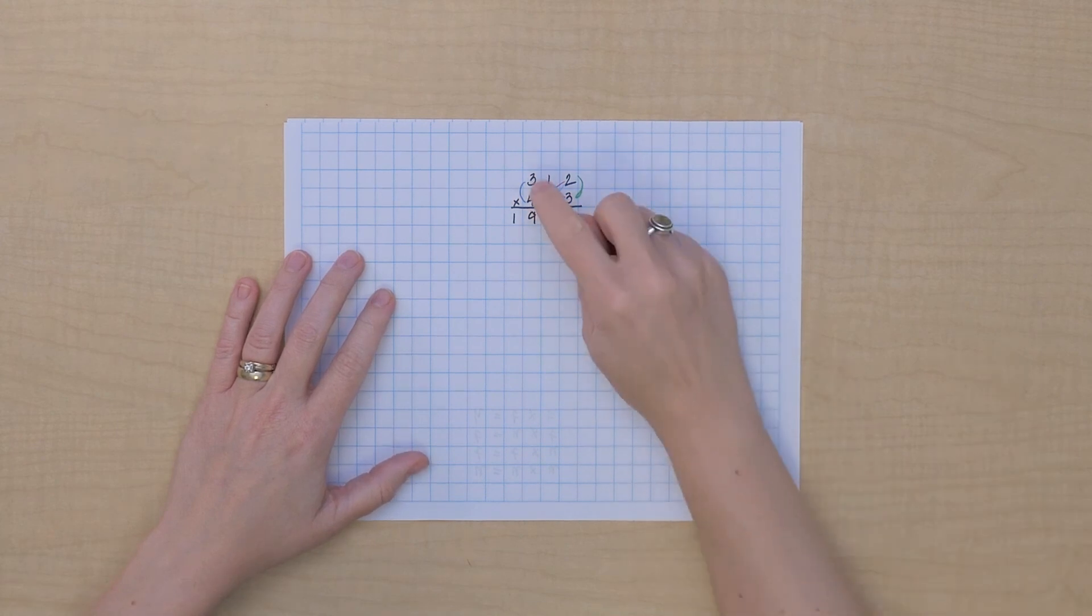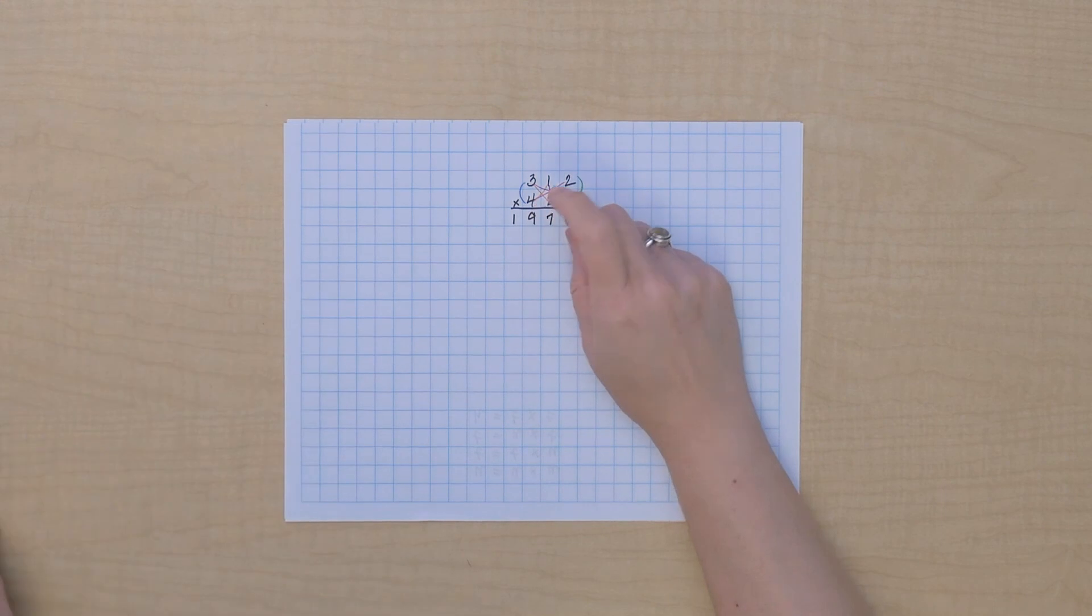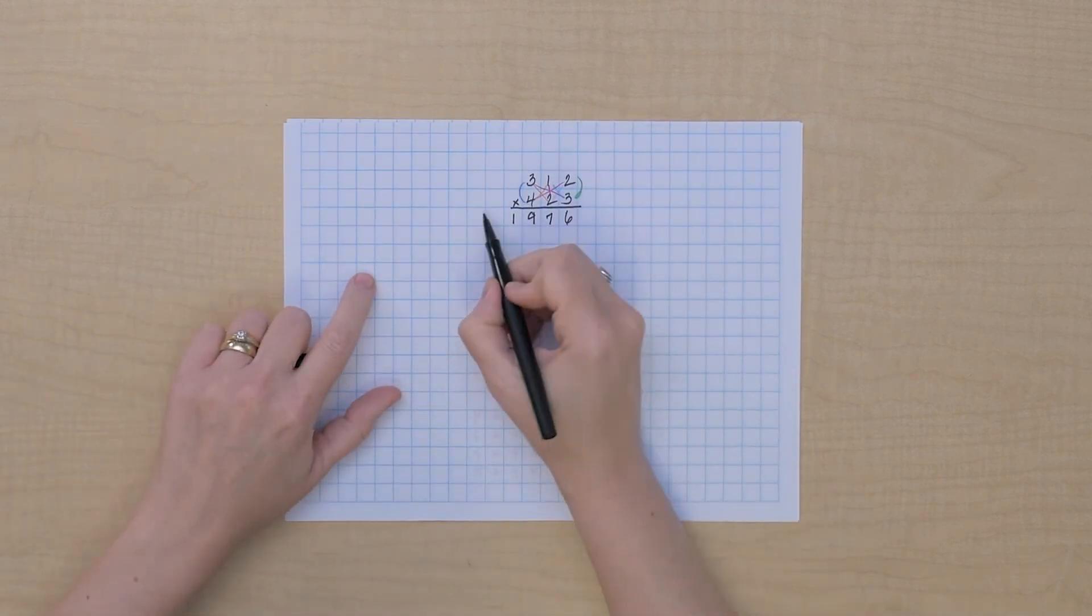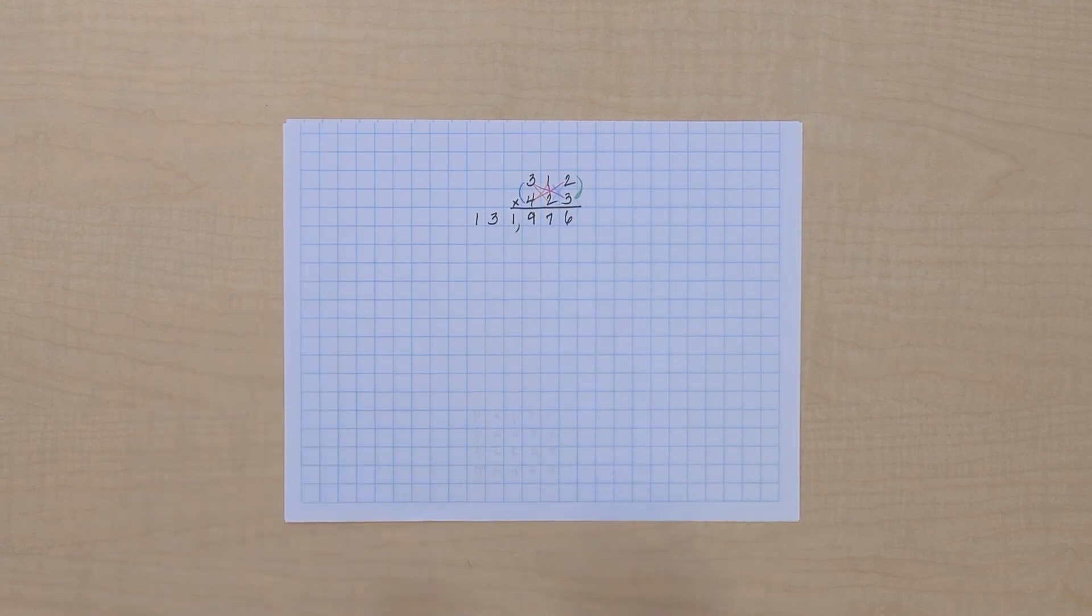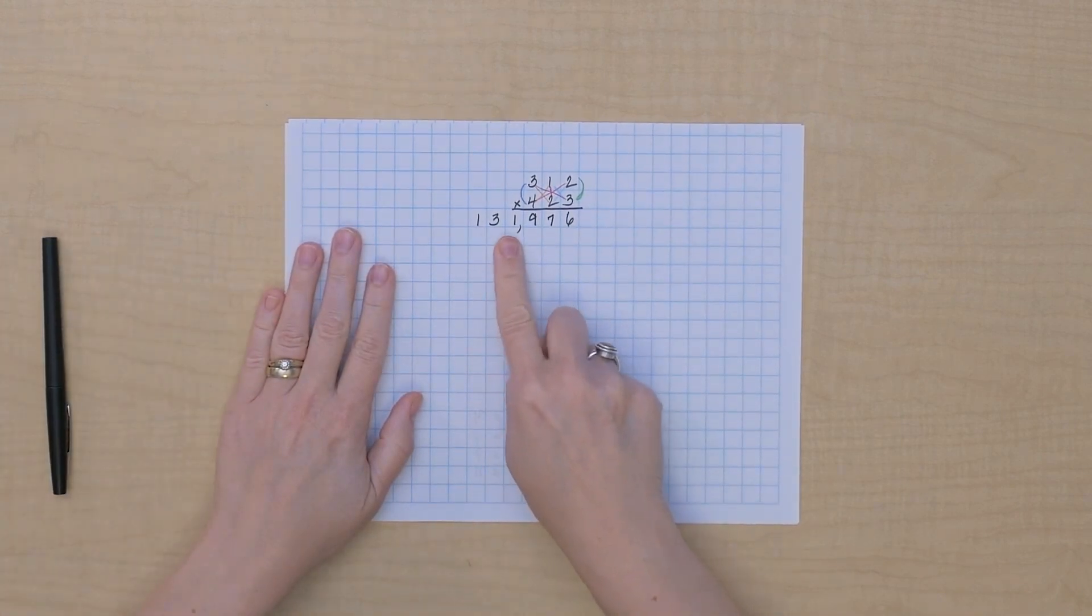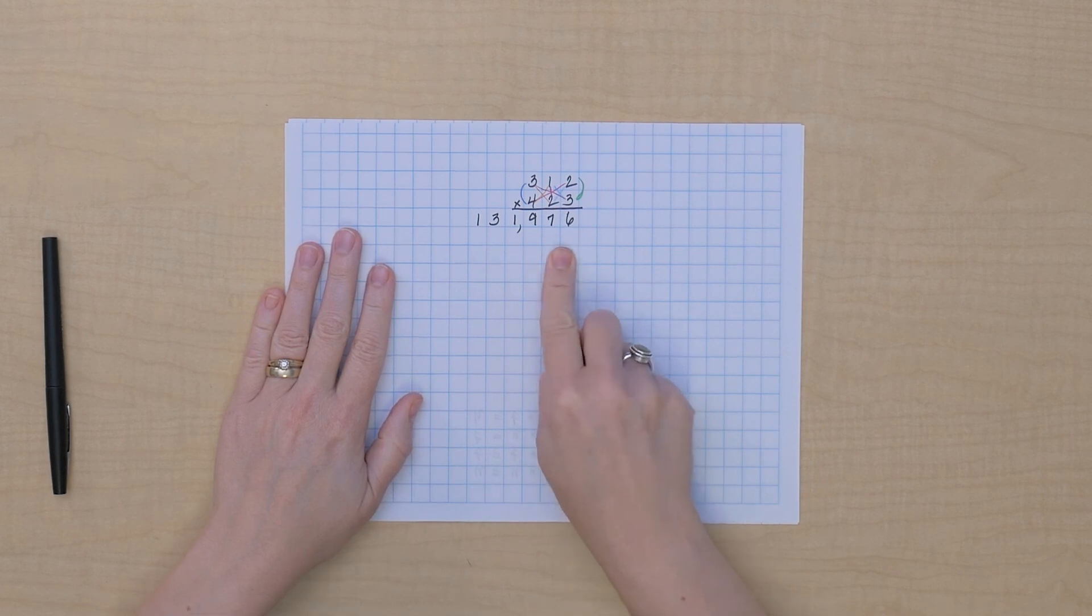So, three hundred times four hundred gives us twelve ten thousands, plus the one we're remembering, is thirteen. So we've got our answer. Three hundred twelve times four hundred twenty-three equals one hundred thirty one thousand nine hundred seventy-six. You might want to do more of these.